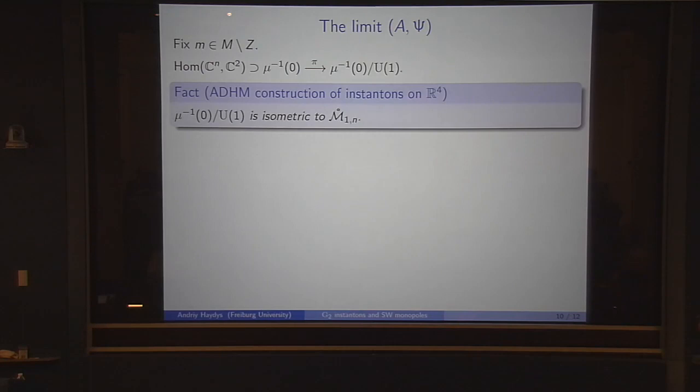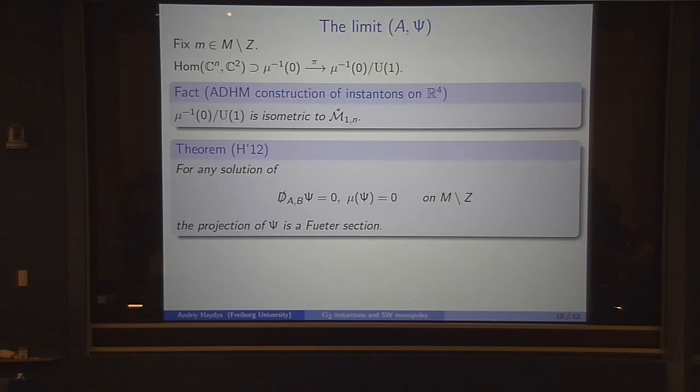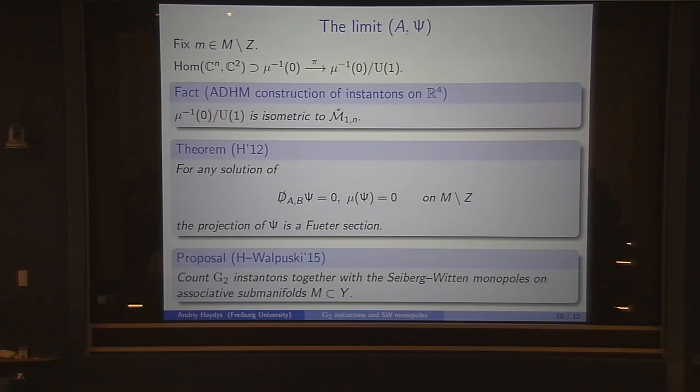The classical construction of instantons on R^4 due to Atiyah, Drinfeld, Hitchin, and Manin tells us that this quotient is nothing else but the moduli space of SU(n) instantons on R^4 of charge 1. If you take any solution satisfying this algebraic constraint, we can project this to the base, that is to the moduli space of instantons. The claim is that the projection is a Fueter section. This provides a basis for relation between G2 instantons and Seiberg-Witten monopoles.